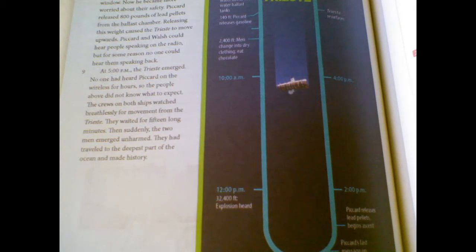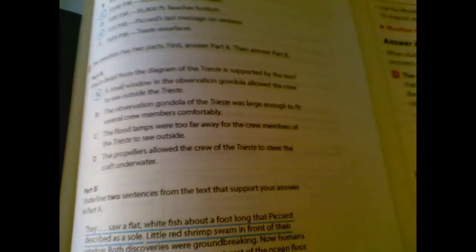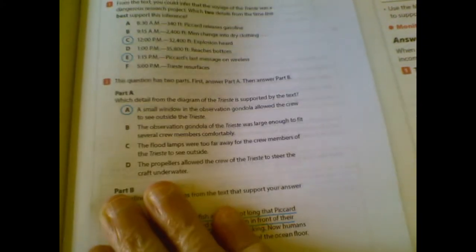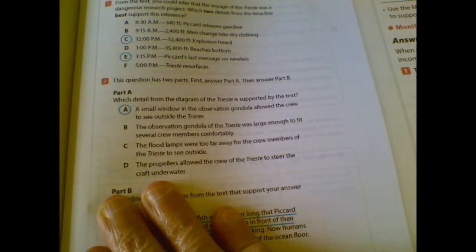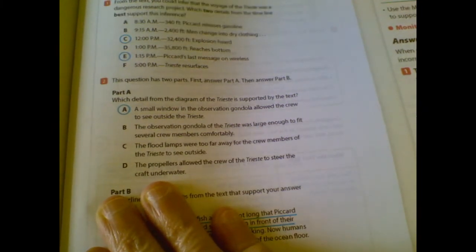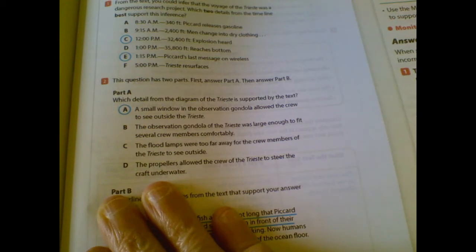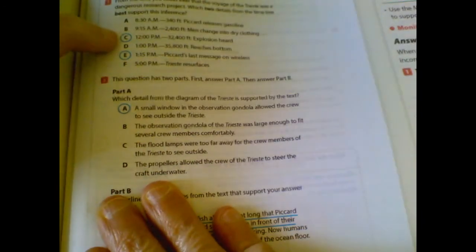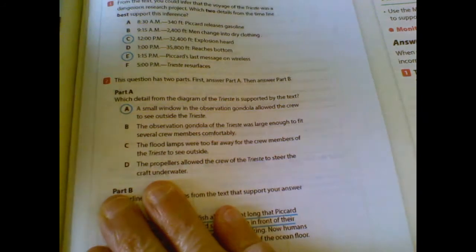So let's look at your answers because this was your independent practice. So this independent means that you are to do this on your own. If you look at this, question one says from the text you could infer that the voyage of the Trieste was a dangerous research project, which two details from the timeline best support this inference.